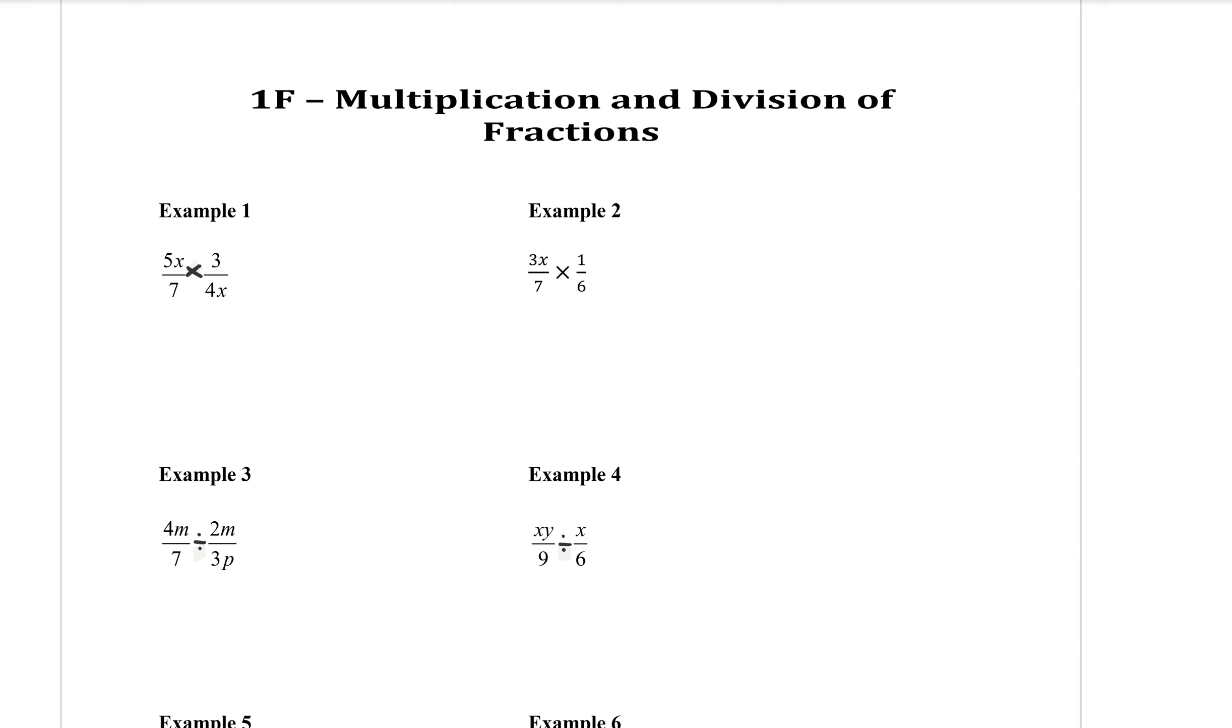For example, I have an X on the top of this fraction and an X on the bottom of that one. That means I can cancel them out. Now, often the canceling is diagonal like that. Sometimes it's just top and bottom, right on top of each other. Anywhere on the top can cancel with anywhere on the bottom when you're multiplying.